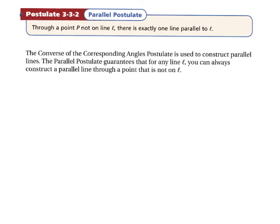This is called the parallel postulate. The parallel postulate says through a point P not on line L, there is exactly one line parallel to L. If you have a line and a point not on that line, you can draw exactly one line parallel to the original line. The converse of the corresponding angles postulate is used to construct parallel lines, and the parallel postulate guarantees that for any line L, you can always construct a parallel line through a point not on that line.